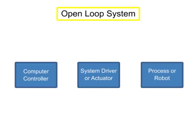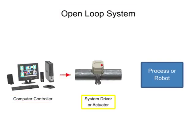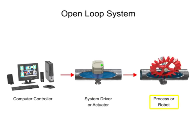In open-loop control systems, signals are first sent by a computer controller to the system driver. The system driver then converts those signals into an operation for the process or robot to perform.